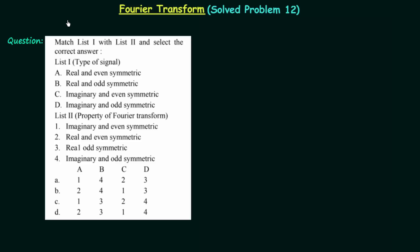In the previous lecture, I gave you the list of xt-xω pairs, and using that list we will solve one question in this lecture. You can see the cutout on your screen — the question is taken from the IES 2002 Electronics and Telecommunication paper. In this question we have List 1 and List 2 and we need to match them. List 1 has the type of signal, meaning xt, and List 2 has the property of the Fourier transform, meaning xω.